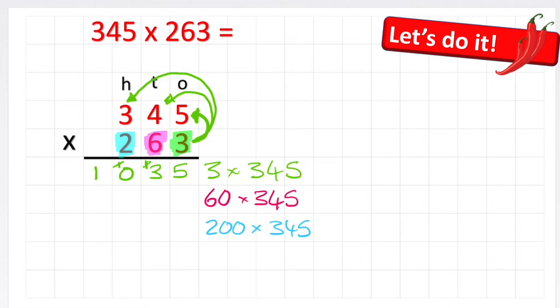Cross that little 1 out. Now I can put my 10 straight into my thousands column because I have nothing else left on this row to actually multiply. So the answer to 3 times 345 is 1,035. I've done that row.